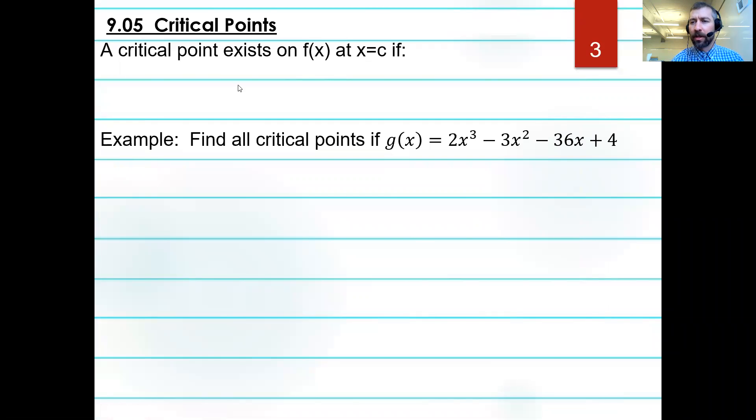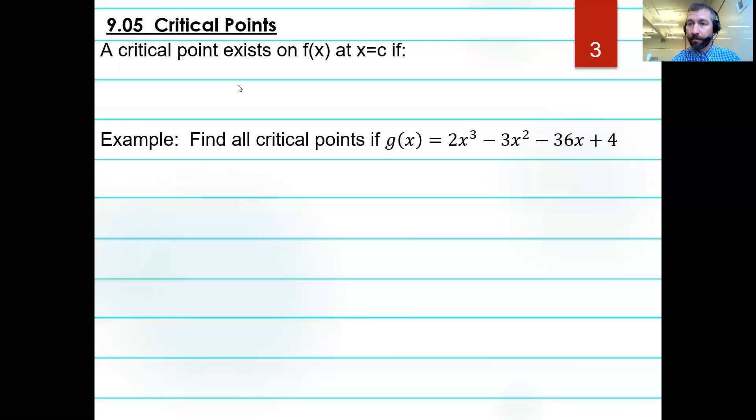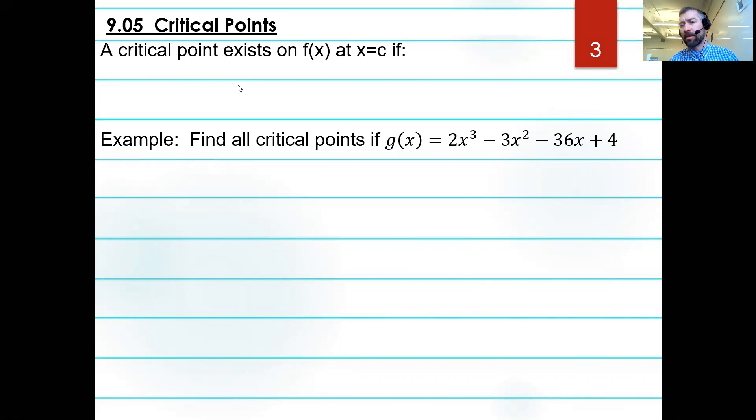So let's start first with a definition that we'll need for a critical point. Now, critical meaning important. And for us, important parts of our graph we might signify maximums, minimums, asymptotes, all sorts of crazy parts of our graph that are very specific. So if we're talking about a critical point, we're talking about some of those important points. Now, a very broad definition, but something we're going to start with.